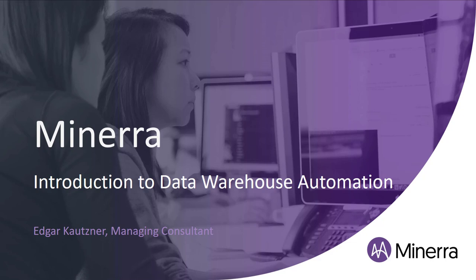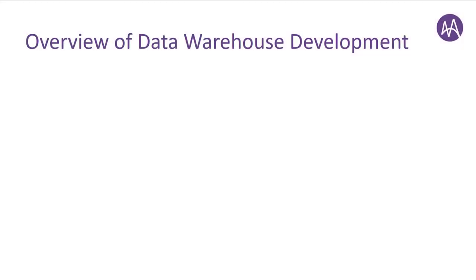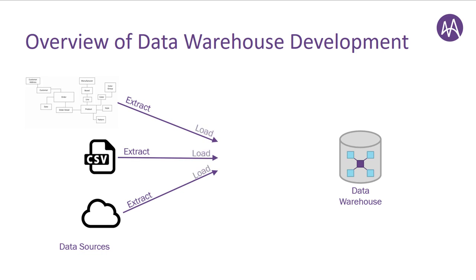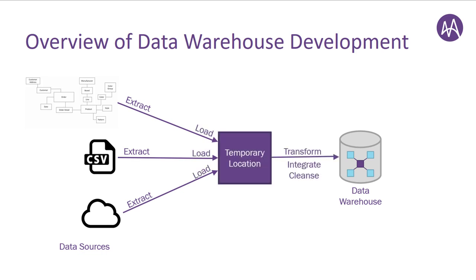Let's first talk about what's involved in developing a data warehouse. Organizations often have data sitting in various locations. This includes operational systems where the data isn't structured for reporting, in Excel or CSV, or perhaps in the cloud in some form. We need to get the data from these sources into our data warehouse where it's structured for reporting. This is done by writing code to extract the data from the sources and loading it into a temporary location. The data is then transformed into a format suitable for reporting. This process also includes quality control of your data, called cleansing, and also data integration. The data is then made available in the data warehouse, structured in an optimum way for reporting purposes.